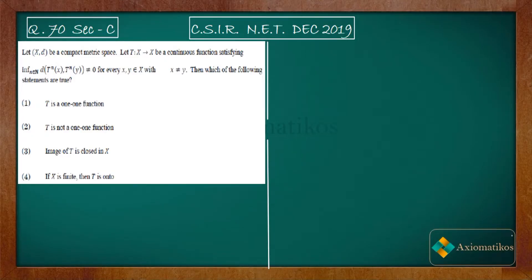Hello dear students, welcome to Axiomatikos. This video is part of the solution series for CSIR NET December 2019, and we are doing Problem 70 of your paper. It's a problem of analysis and it is of MSQ type, which means more than one option can be correct.